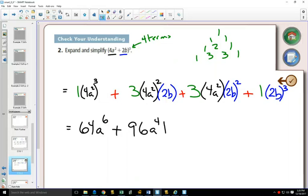2² is 4, 4 times 4 is 16 times 3 is 48 a²b², and finally 2³ is 8b³. So this is the final simplified version of this one. There's a question you can do for practice.